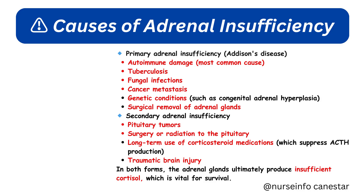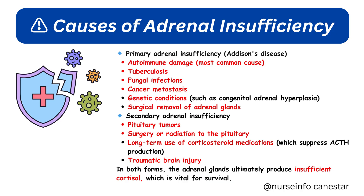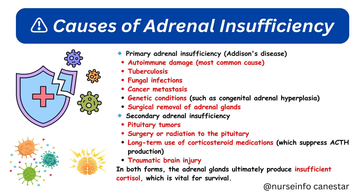Causes of Primary Adrenal Insufficiency — Addison's disease — include autoimmune damage (the most common cause), tuberculosis, fungal infections, cancer metastasis, genetic conditions such as congenital adrenal hyperplasia, and surgical removal of the adrenal glands. For Secondary Adrenal Insufficiency, causes include pituitary tumors, surgery or radiation to the pituitary, long-term use of corticosteroid medications which suppress ACTH production, and traumatic brain injury. In both forms, the adrenal glands ultimately produce insufficient cortisol, which is vital for survival.